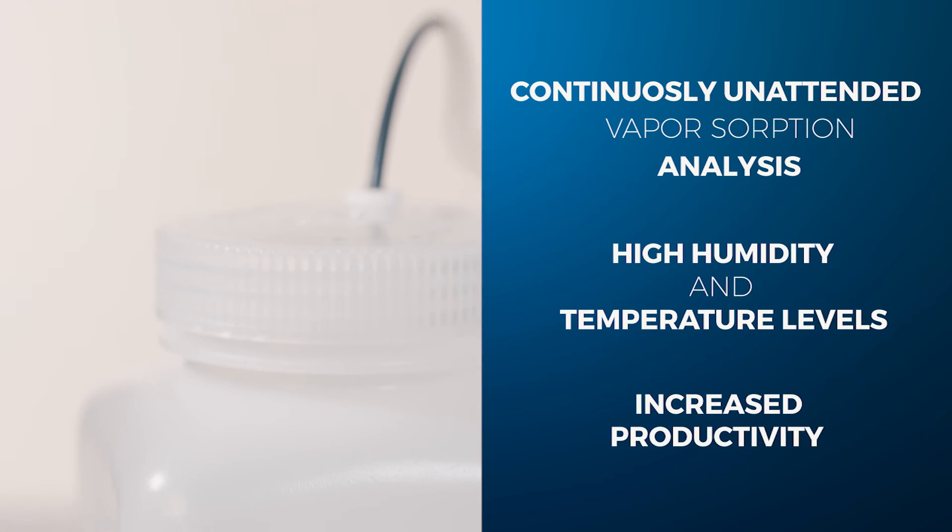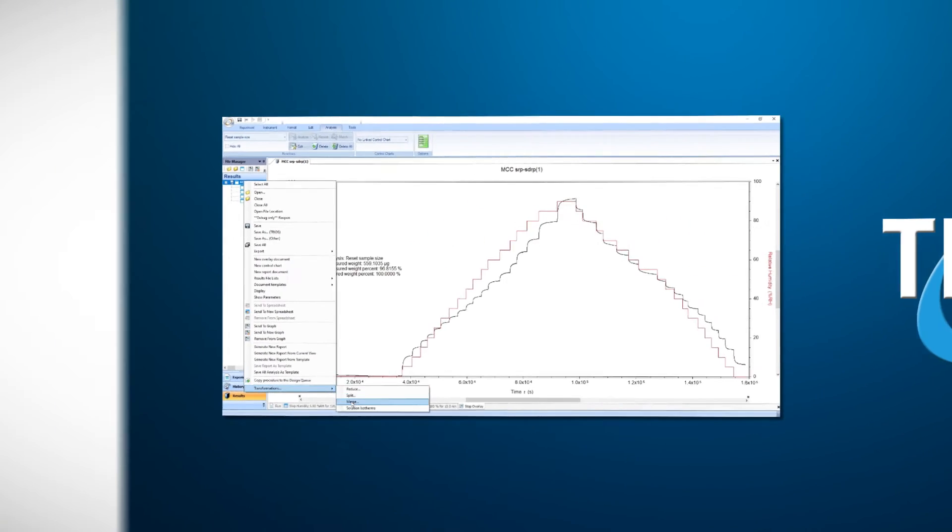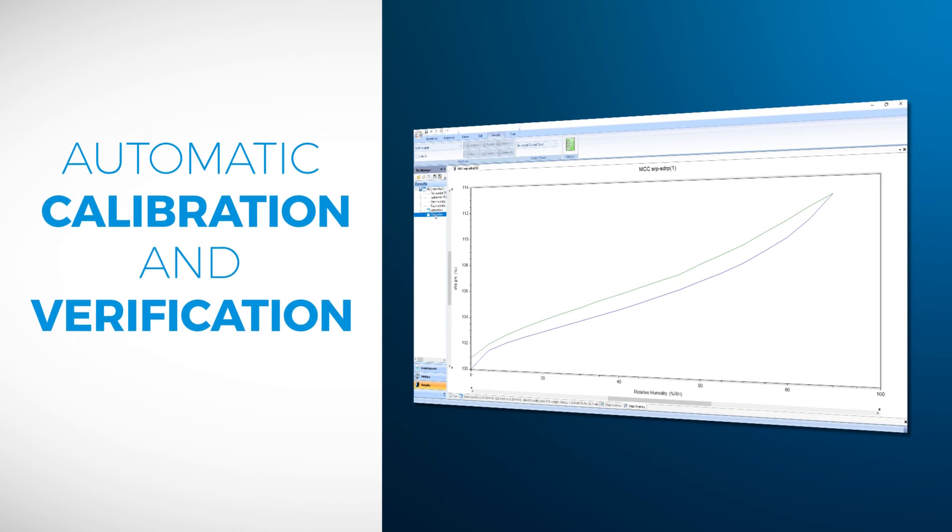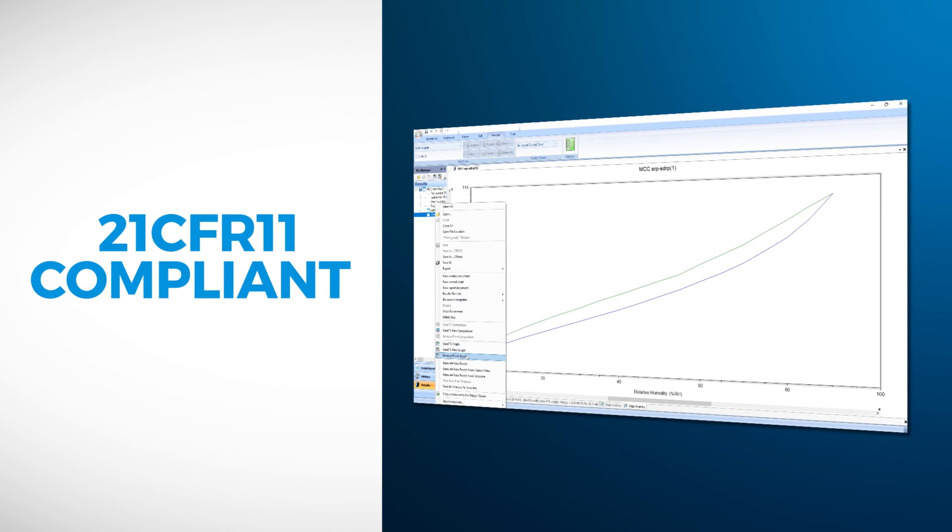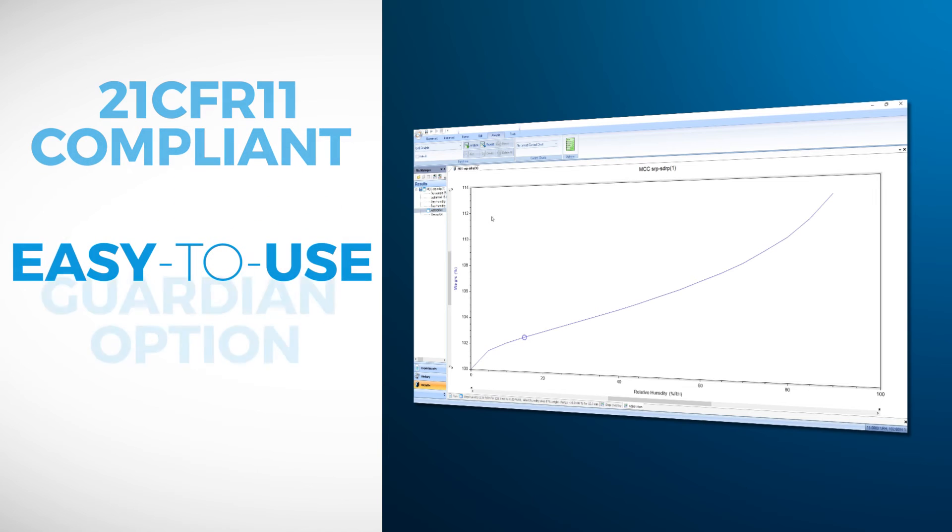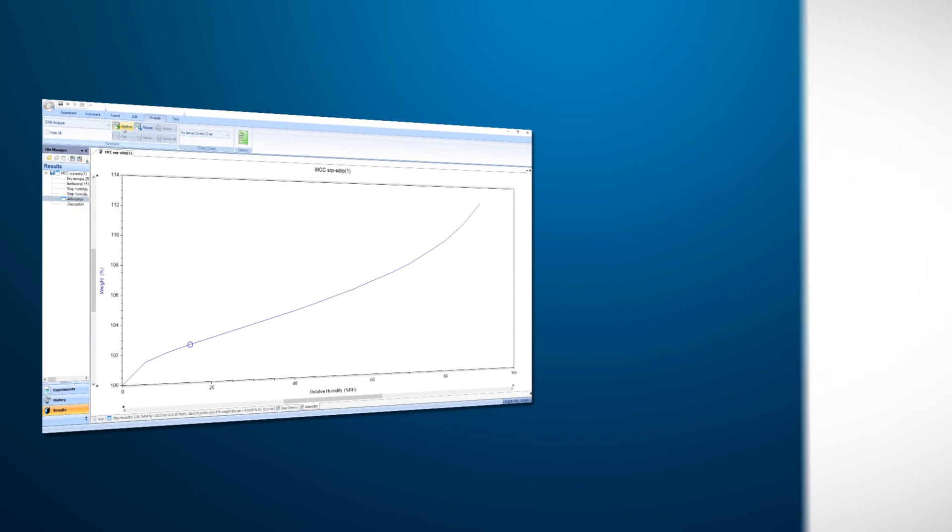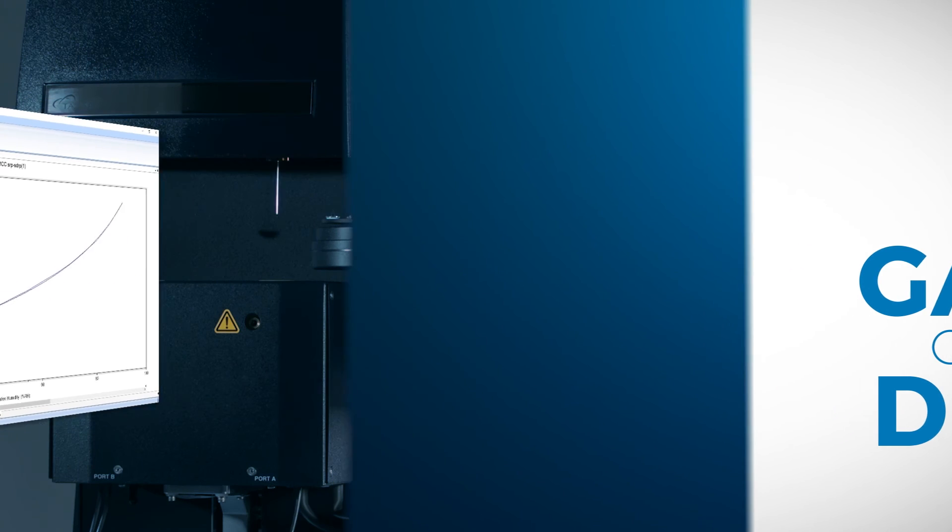Designed to further increase efficiency, TA's powerful TRIOS software offers many useful functions, including automatic calibration and verification, as well as model fitting. TRIOS is 21 CFR 11 compliant through the easy-to-use Guardian option. Fitting sorption isotherm data with available models like GAB or DLP provide parameters allowing to calculate characteristic properties, such as monolayer capacity and surface area.